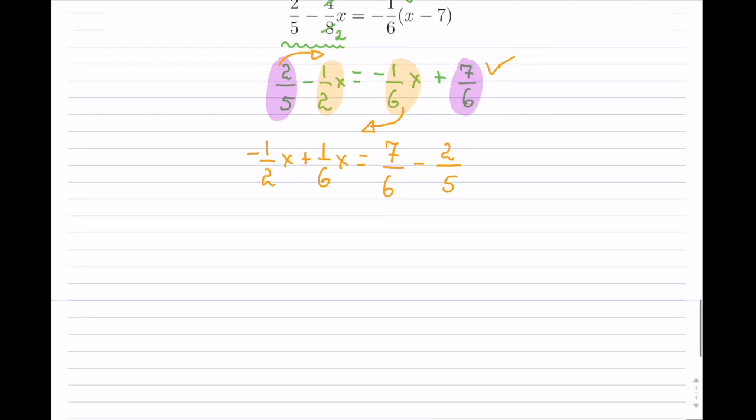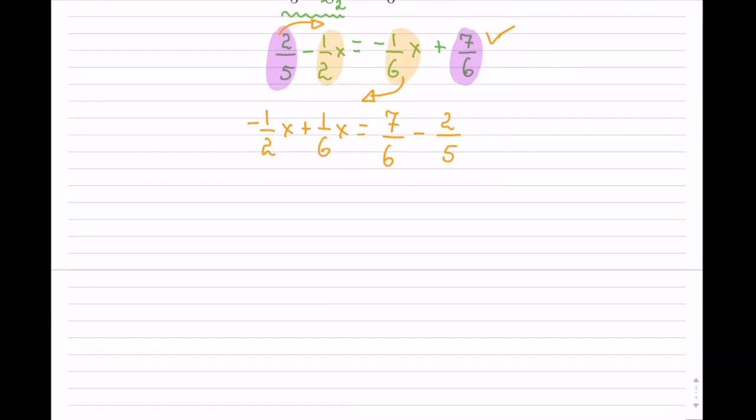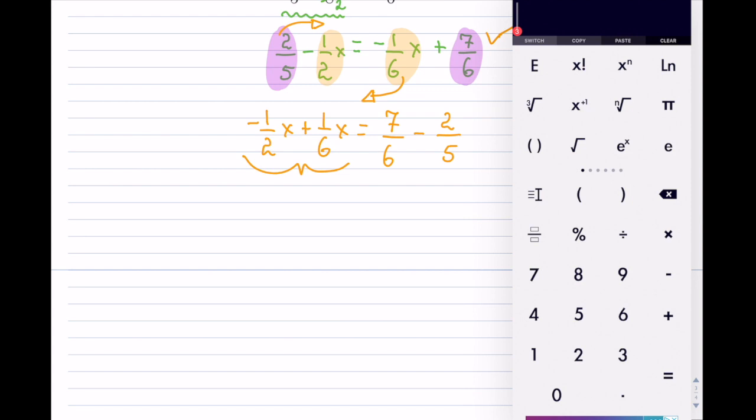Now let's collect these. You can find a common denominator, you can use your calculator if you like with your fraction button. So I'm going to just use the fraction button for this. I have negative 1 half, so that's that, plus the 1 over 6 that we have there. So I can hit that and it is negative 1 over 3 x. So that's on the left hand side.